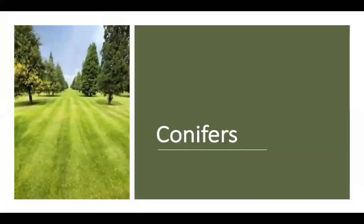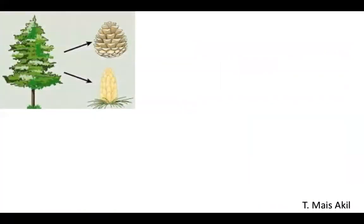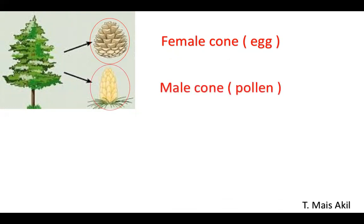Now let's talk about the conifers. As we said, the flowering plants have male flowers and female flowers. Similarly, conifer plants have female cones and male cones. The female cone makes the egg and the male cone makes the pollen. After that, the pollen moves from the male cone to the female cone — we call this process pollination. Then they make the seeds inside the female cone, just as the flowering plants do, but instead of flowers there are cones.